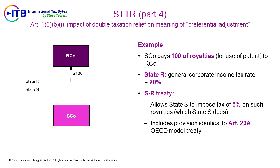In State R, the general corporate income tax rate is 20%. The SR Treaty allows State S to impose tax of 5% on such royalties, which State S does. The SR Treaty includes a provision which is identical to Article 23A of the OECD Model Treaty.